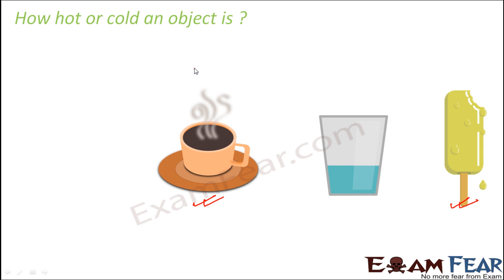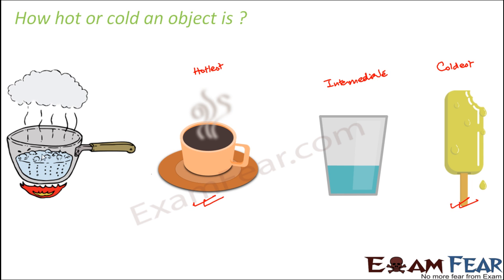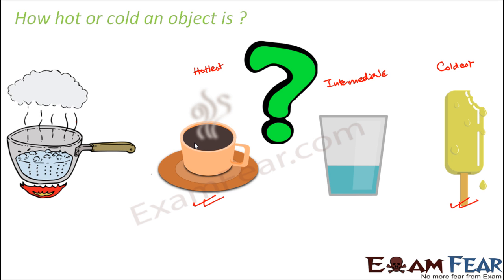But does that mean those are the only three things that define hotness? What if I introduce a vessel with boiling water, whose temperature is even more than that of the cup of coffee — even hotter than what we had described as hottest? How do we describe the hotness of this vessel? There is no specific limit to how hot or how cold an object can be, so how do we measure the hotness or coldness of an object?